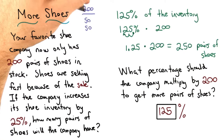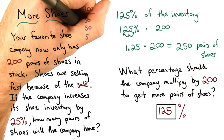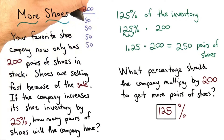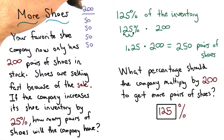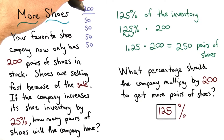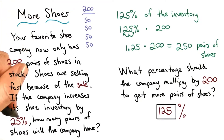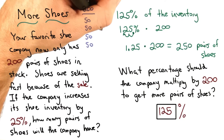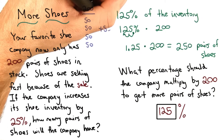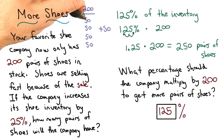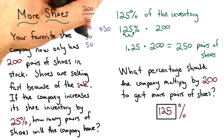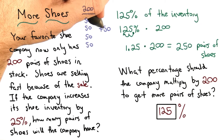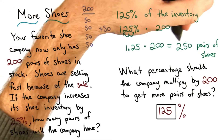We can think of 200 as four 50s. Each 50 is one quarter, or 25% of 200. If I want to increase 200 by 25%, I'm going to add another 50. So I have 50 and 50, which is 100; I have another 100, which is 200; and 50 more, which is 250.